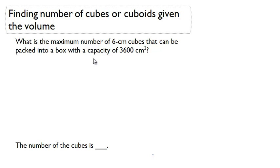Let's find the number of cubes. Let's think about this. The volume for each one of those cubes would be 6 times 6 times 6, which is simply 216 cubic centimeters. So that's the volume of each smaller cube.